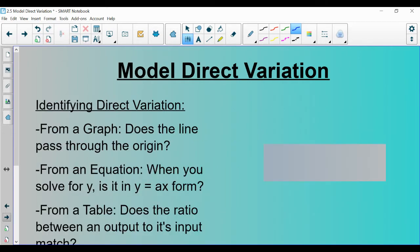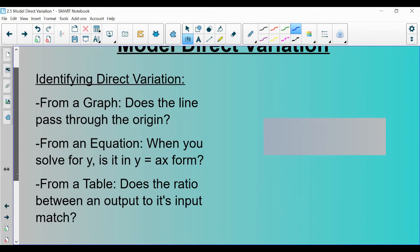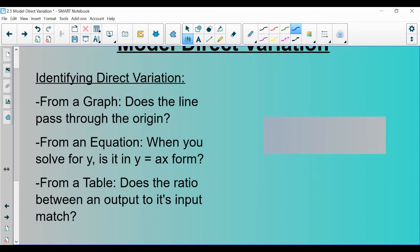So one of the tasks you guys need to be able to do is to identify when something is direct variation. And I'm going to give you different forms and you guys have to tell me if it's direct variation or not. If we are dealing with a graph, I give you a graph and I say, is this direct variation? You just have to say, does it pass through the origin?